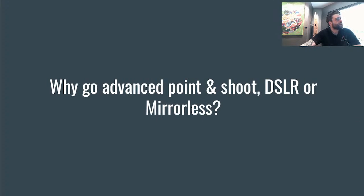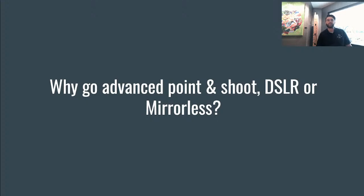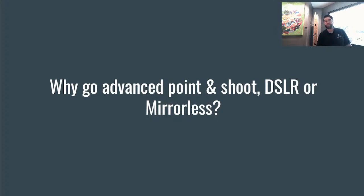So why go advanced — point and shoot, DSLR, or mirrorless camera? As a photographer moving away from your phone, you're moving into a more advanced camera. Your phone is a really great camera — it shoots anywhere between 12 and 16 megapixels, which is a pretty good number for most cameras nowadays. When I first bought my Canon Rebel back in 2011, it had a 16 megapixel sensor. Cameras today start at 20, some at 24, and advanced ones go up to 42 or 64 megapixels.